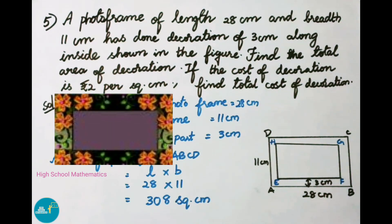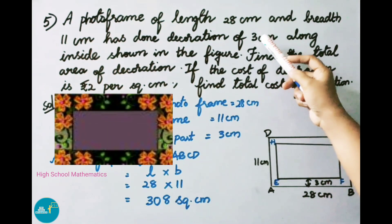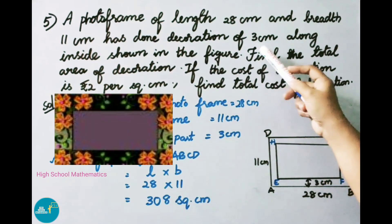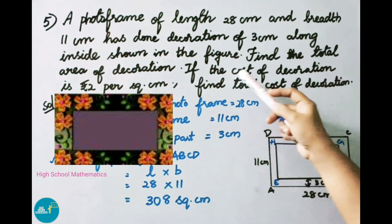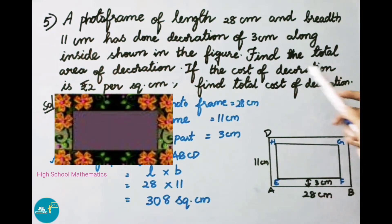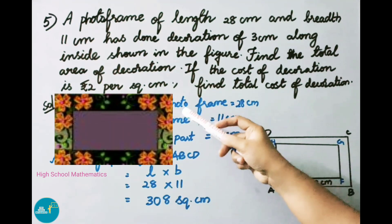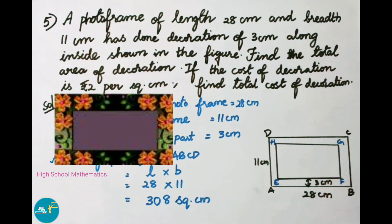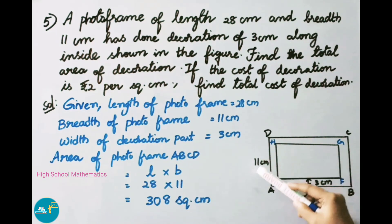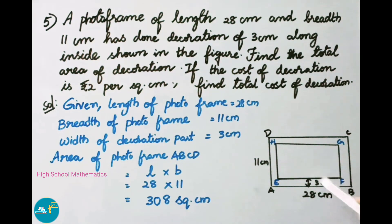See now question number 5. A photo frame of length 28 cm and breadth 11 cm has decoration of 3 cm along the inside as shown in the figure. Find the total area of decoration. If the cost of decoration is 2 rupees per square centimeter, find the total cost of decoration. Length of photo frame is 28 cm, breadth is 11 cm, and width of the decoration part is 3 cm.